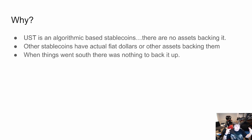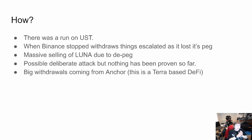The system can handle a few percentage points of deviation, but when you get to 50%, you have a problem. There was a run on UST. Binance, a major exchange, stopped withdrawals of both UST and Luna. Things escalated as it lost its peg, and then there was massive selling of Luna due to the de-peg.